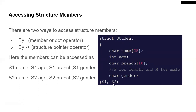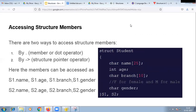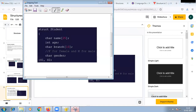By declaring one structure with two variables, each variable can hold a different record. Now let's see a small example in the IDE.